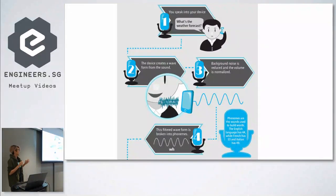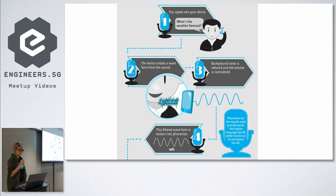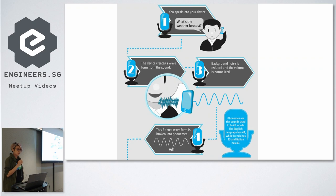The basic sequence of events is as follows. You speak into your device, the device creates a waveform from the sound, and some preprocessing is done such as reducing background noise and normalizing the volume. This filtered waveform is then broken into what we call phonemes. Phonemes are the sounds used to build words — for example, the English language has 44 phonemes.